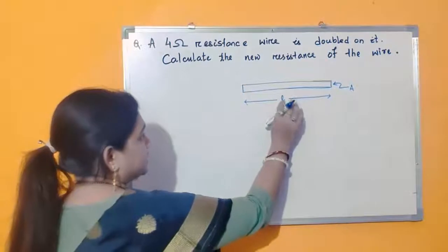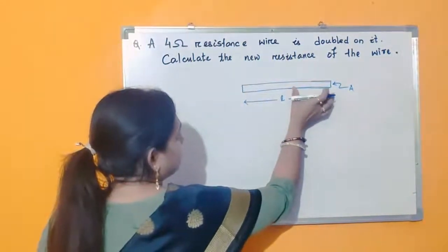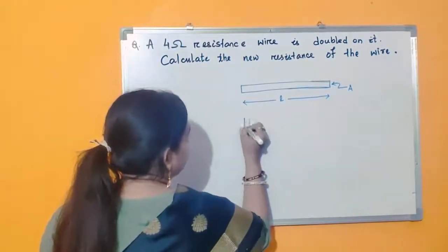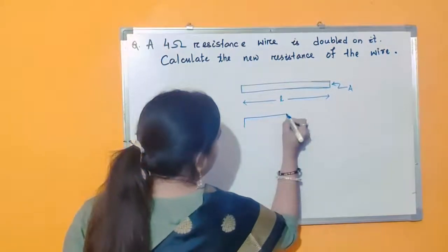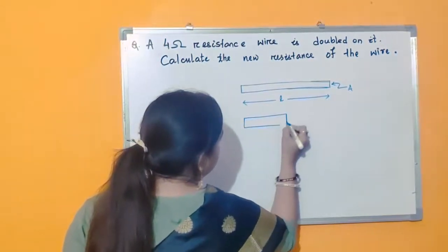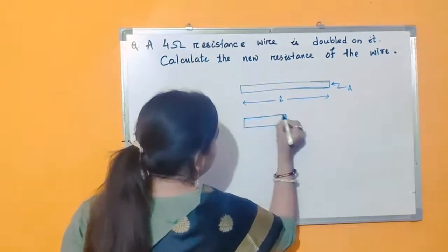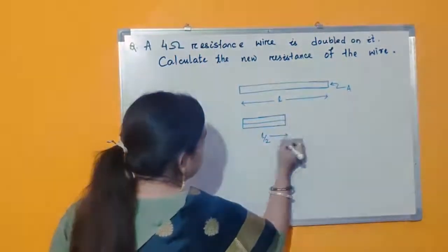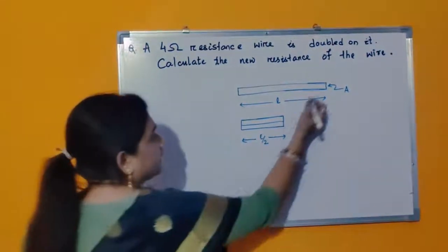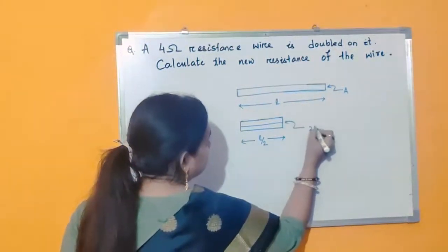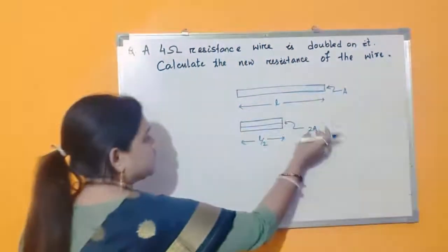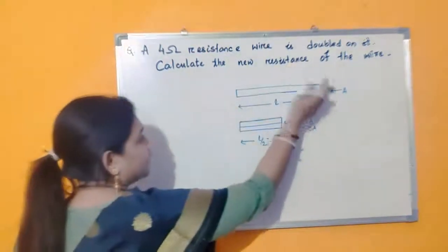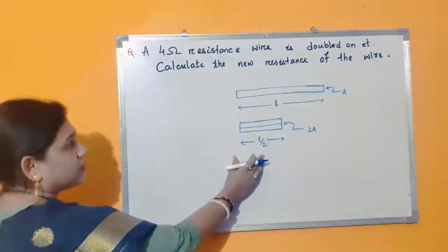It means the wire is folded on itself. So basically this part is folded over this part. So what is our new figure? This length becomes L/2 — the length becomes half — and this area becomes twice. The area of cross-section becomes 2A. So this is our original wire, and after folding, after doubling on itself, this is our final configuration.